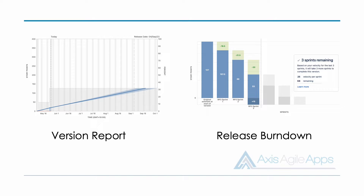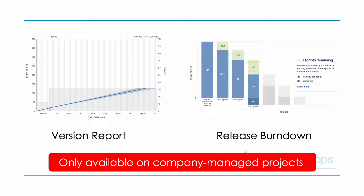Before I take you through those two reports, there is a bit of bad news. Unfortunately they are only available with company managed projects. So if you're using a team managed project, you will need to export the data and perhaps create a similar type of graph or chart manually. But by looking at these reports you'll see what sort of information to track and how you can use it to see if your team is going to deliver on time. Let's begin by taking a look at the version report.